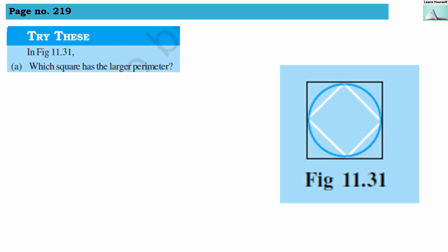Try these sums from page number 219. We have to solve these examples with respect to figure 11.31 as you can see it over here. The first question is which square has larger perimeter.